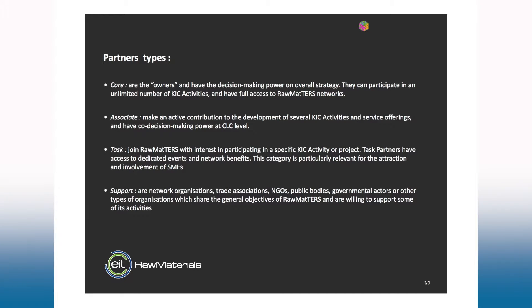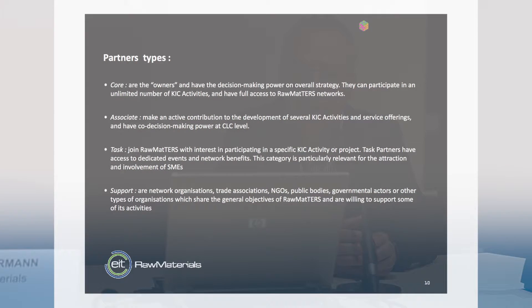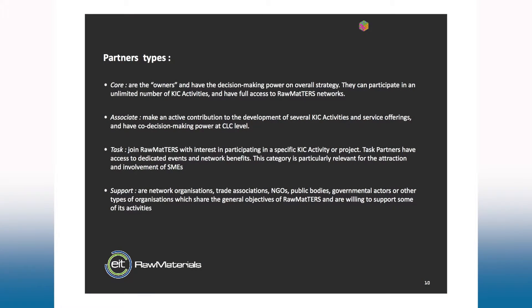We have four types of partners. The most important are co-partners and associate partners. Co-partners make decisions and set strategy at both headquarters level and CLC level. They can participate in a limited number of activities and have full access to the Raw Materials network. Associate partners make active contributions to the development of several KICs and have co-decision-making power at the CLC level.